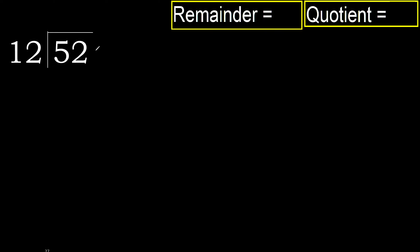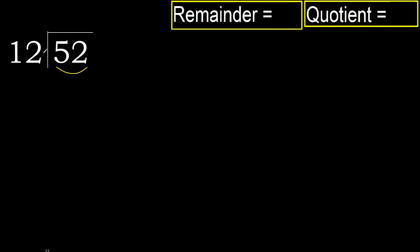52 divided by 12. 5 is less, therefore next. 52 is not less, therefore with 52: 12 multiply by which number is nearest to 52,